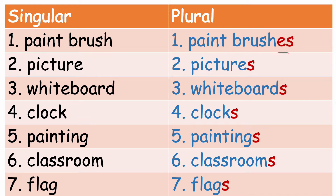Look at here. So far we've learned words that end with -s, like 'picture' becomes 'pictures'. But here you can see 'paint brush' becomes 'paint brushes' — you need to add -es to make this word plural. Brush, brushes.